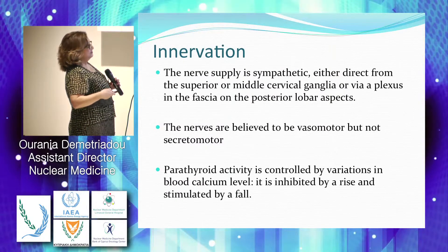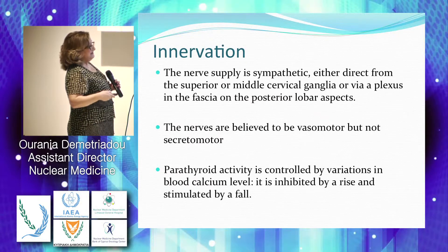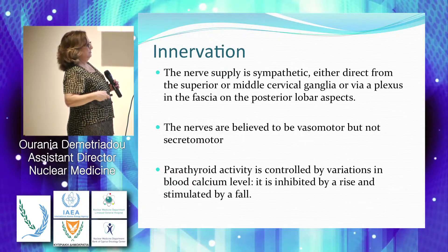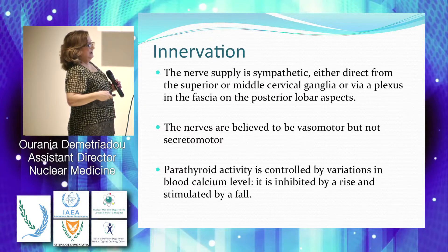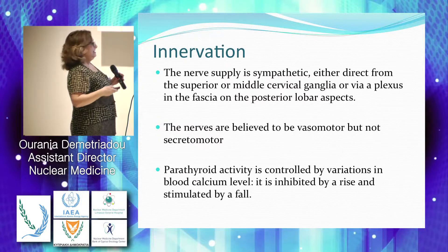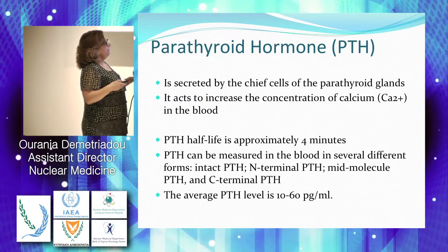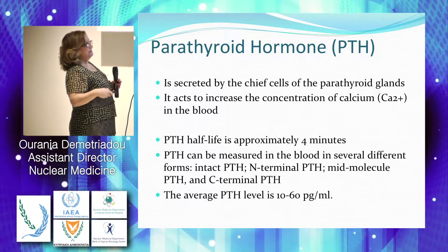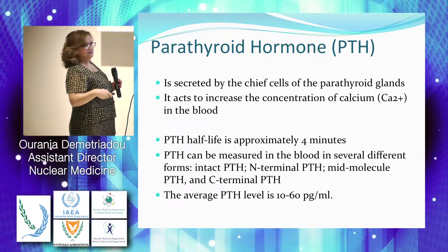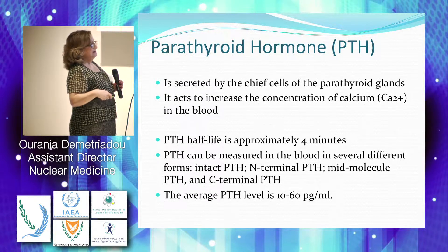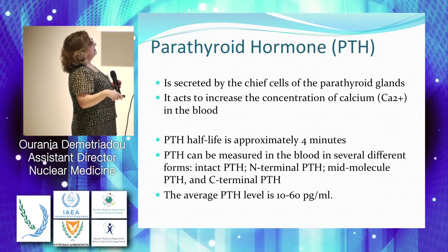Usually the parathyroid glands have two or more arteries, and the lymphatic vessels are the same as the thyroid and thymus. The innervation is vasomotor but not secretomotor, and the activity is controlled by variations in blood calcium — inhibited when calcium in the blood is high and stimulated when the calcium level falls. The half-life is approximately only 4 minutes of PTH, and we can measure different parts of this parathormone by immunoassays. The average PTH level is between 10 to 70 picograms per ml.